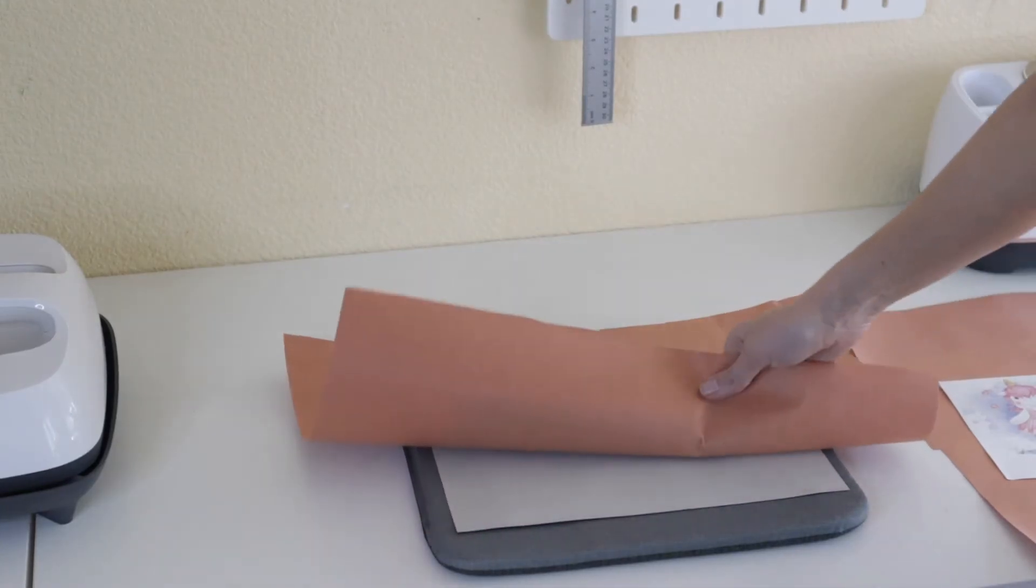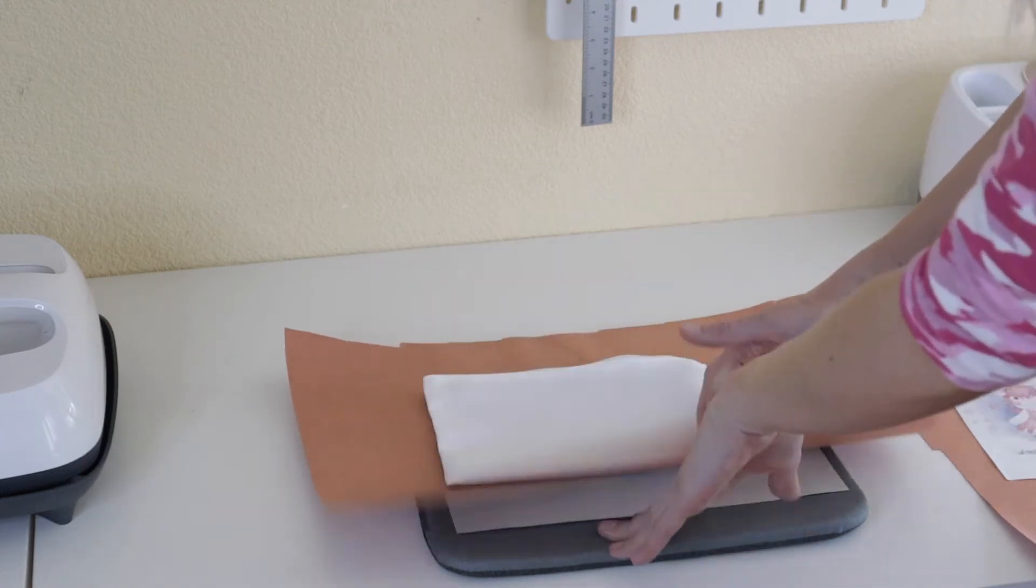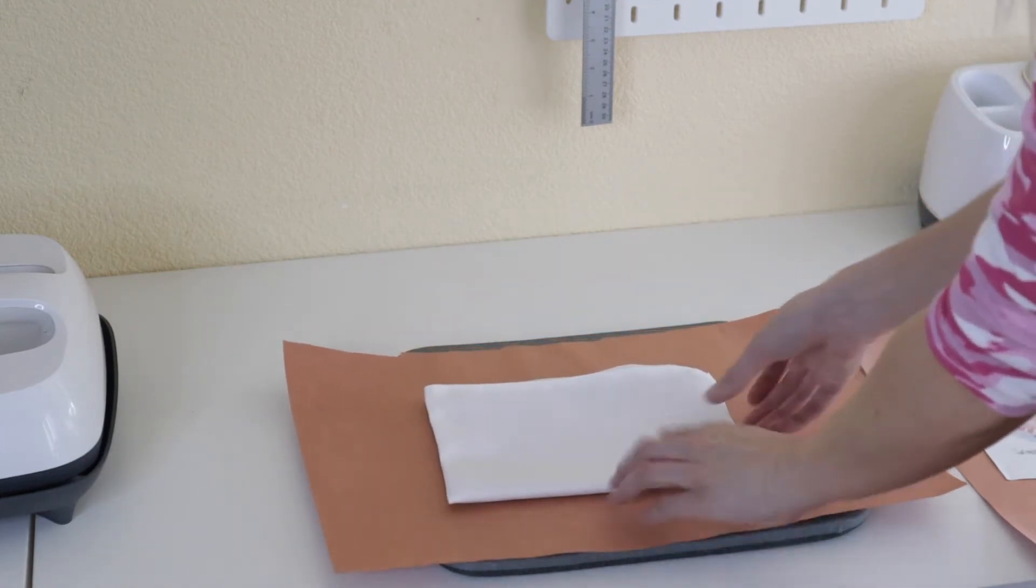Whenever I'm using my EasyPress to sublimate I like to just make sure I have a piece of cardstock down on my mat and then I have some butcher paper down.